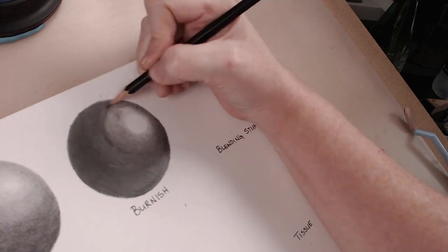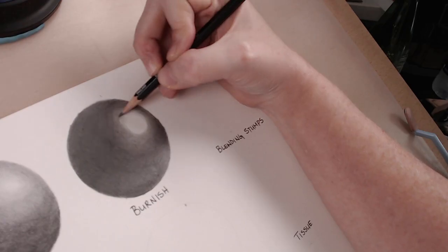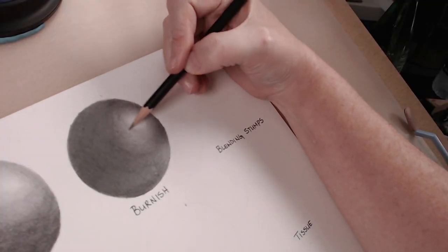It does flatten the tooth of the paper and will create more shine. You may not be able to do any further layering so burnishing should be close to the last if not the last thing you should do.